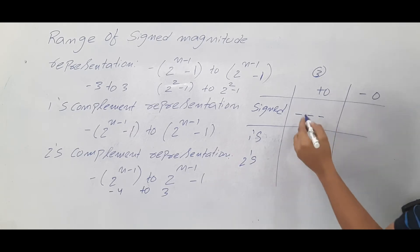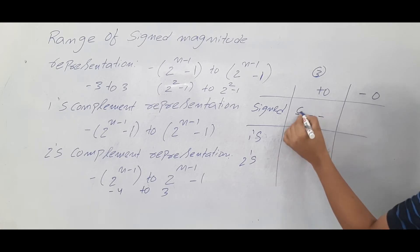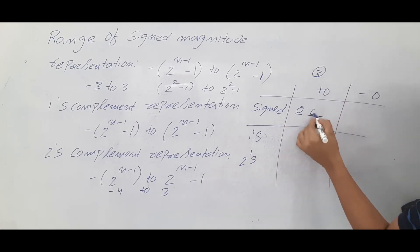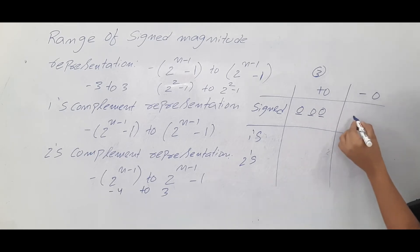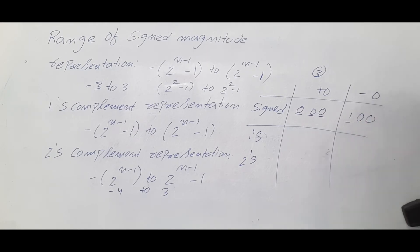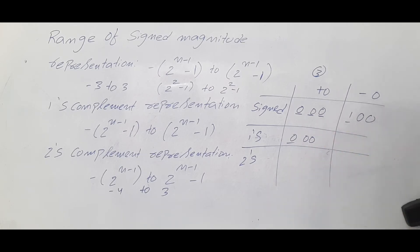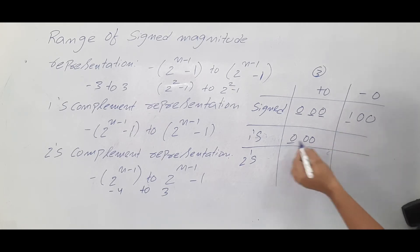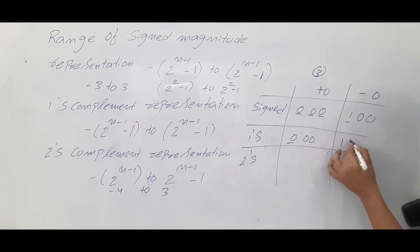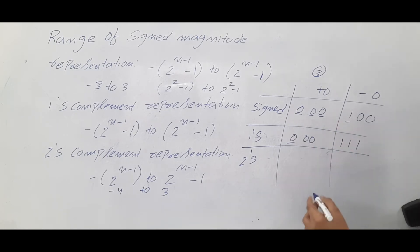For plus 0 in sign magnitude: the sign bit is 0 and the value bits are 00, giving 000. For minus 0 in sign magnitude: the sign bit is 1 and the value bits are 00, giving 100. For one's complement, plus 0 is also 000, and minus 0 is the one's complement of 000, which is 111 — all ones.